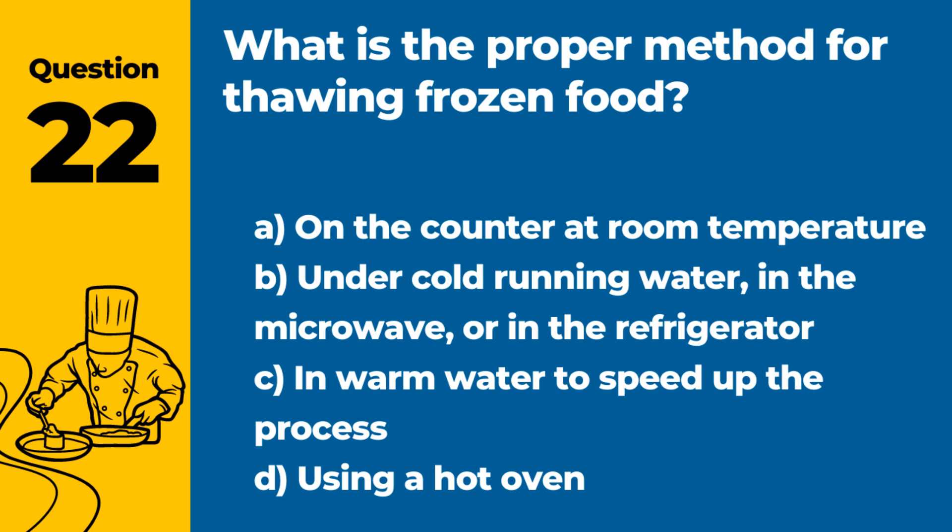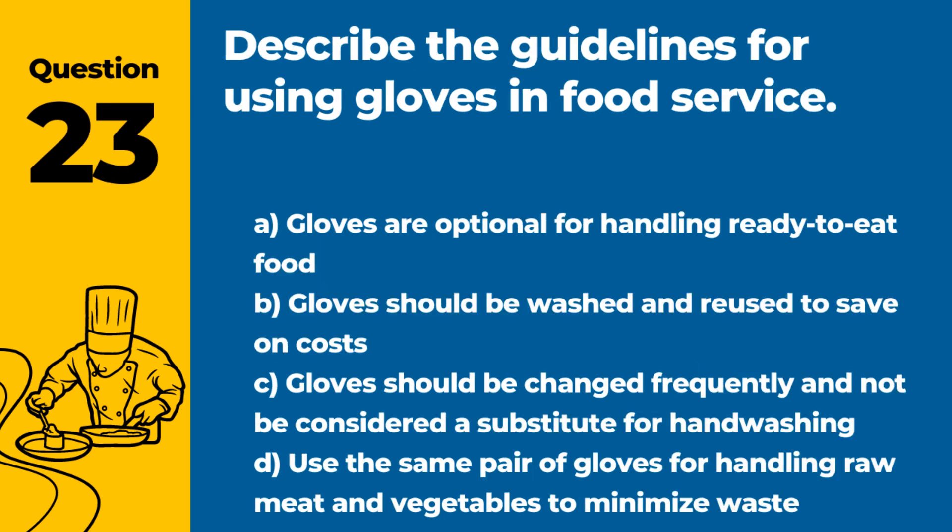Question 22. What is the proper method for thawing frozen food? Answer: B. Under cold running water, in the microwave, or in the refrigerator. These methods ensure food is thawed safely, reducing the risk of bacterial growth.